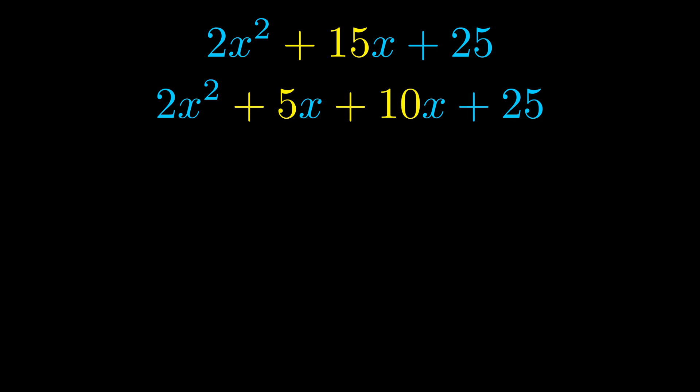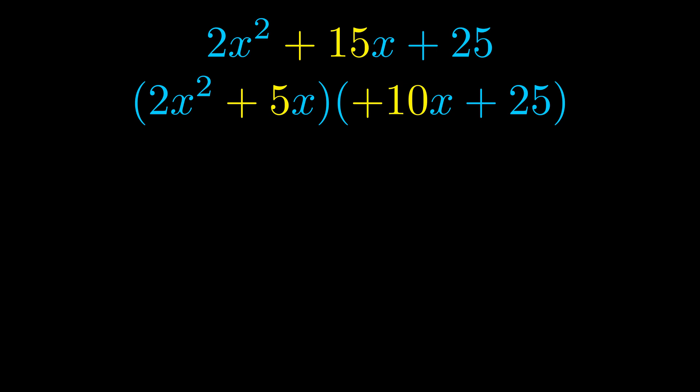Once we've done this, we go ahead and we put parentheses around the first term and the last term. And we do that so that we can take the greatest common factor out of both terms. We can see the greatest common factor is now outside in green.